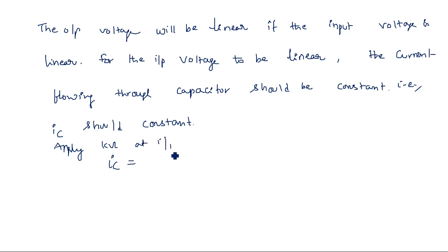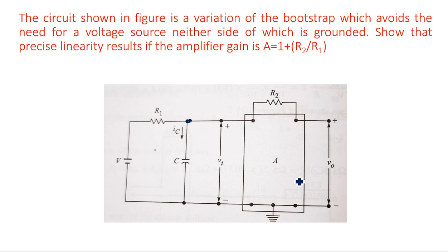Applying KVL at the input, Ic equals (V minus Vi) by R1 plus (V0 minus Vi) by R2. From here, we can write Ic as V minus Vi by R1 plus V0 minus Vi by R2.